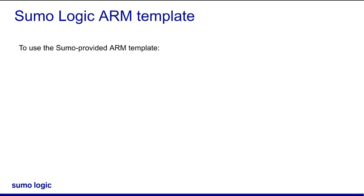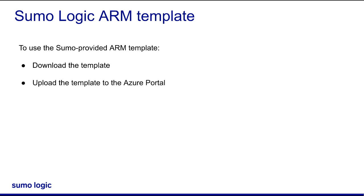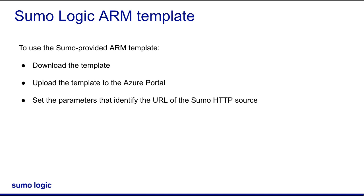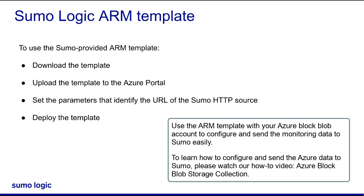To use the Sumo-provided ARM template, download the template — the URL to download the template is provided in the description section of this video. Upload the template to the Azure portal. Next, set the parameters that identify the URL of your Sumo HTTP source, as well as the storage account name, storage account resource group name, and storage account region where you want to collect the logs. Then, deploy the template. Use the ARM template with your Azure Block Blob account to configure and send the monitoring data to Sumo easily. To learn how to configure and send the Azure data to Sumo, please watch our how-to video entitled Azure Block Blob Storage Collection.